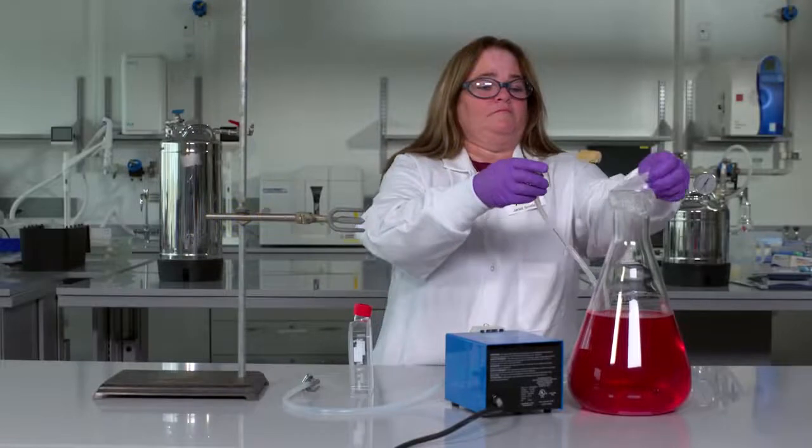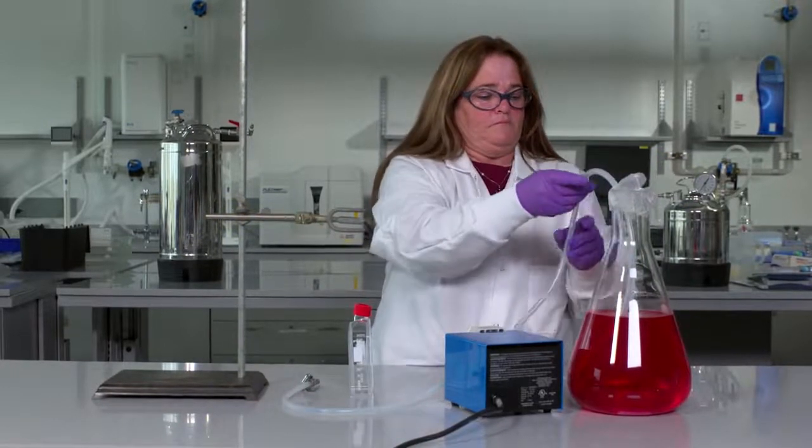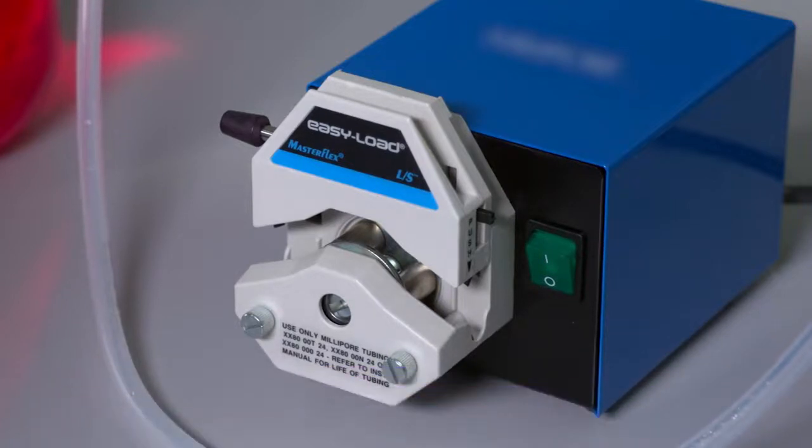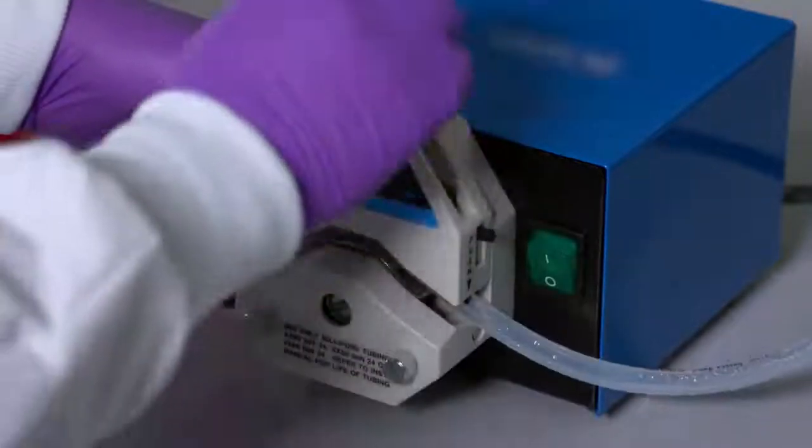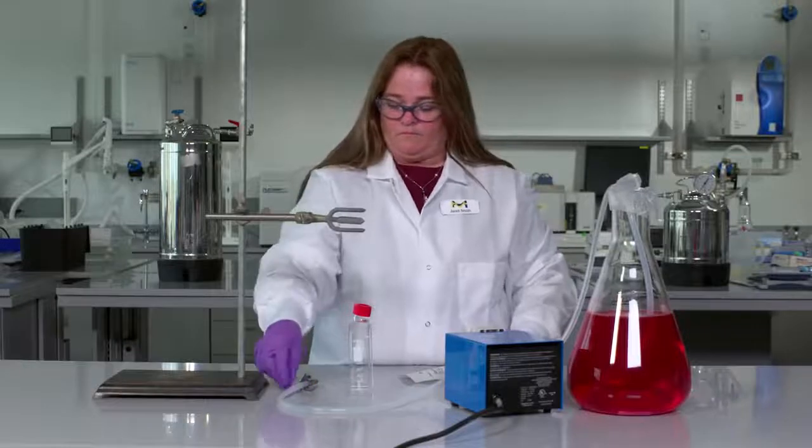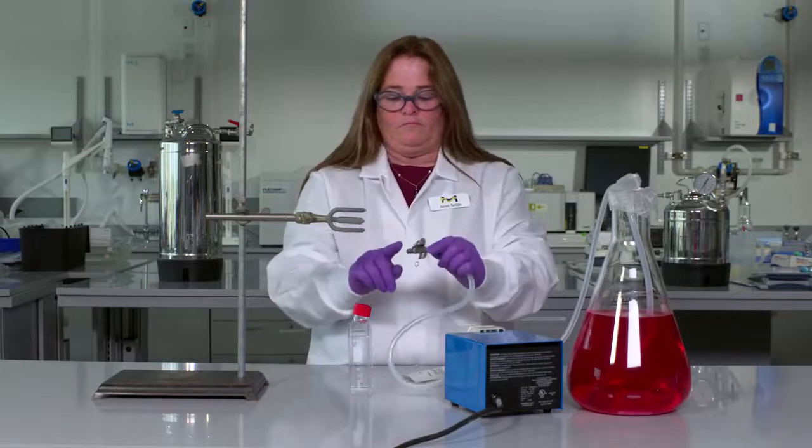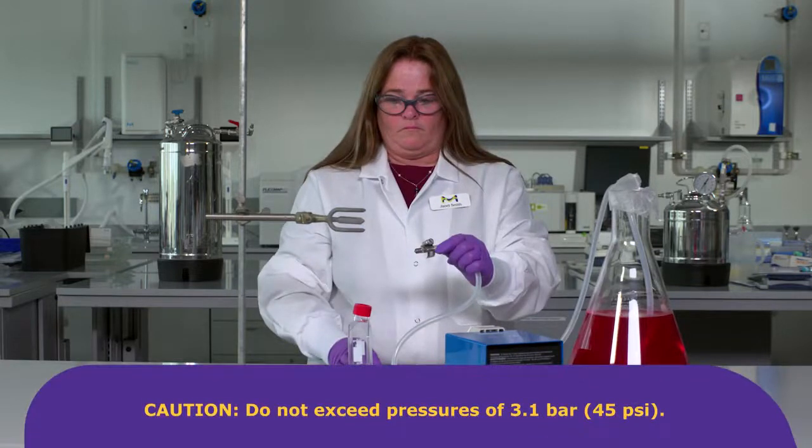Fill a flask with the solution to be sterilized. Prepare a peristaltic pump. For best results, use a pump drive and pump head that can deliver a flow rate of approximately 100 mils per minute at the speed of 60 rpm. Load the peristaltic pump head with 4.8 mm silicone tubing and attach a 6.4 mm hose barbed lure lock adapter to the outlet side of the tubing. Do not exceed pressures of 3.1 bar.